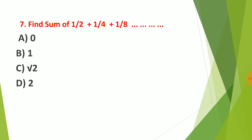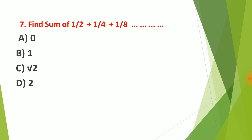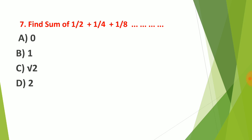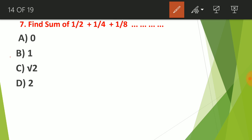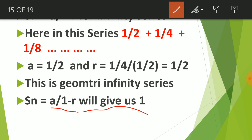Question 7: This is an infinite series because the last term is not given and we don't know the number of terms. The first term is 1/2 and the common ratio is also 1/2. Using the formula Sₙ = a / (1 − r), we get 1. So option B — 1 — is the correct answer.